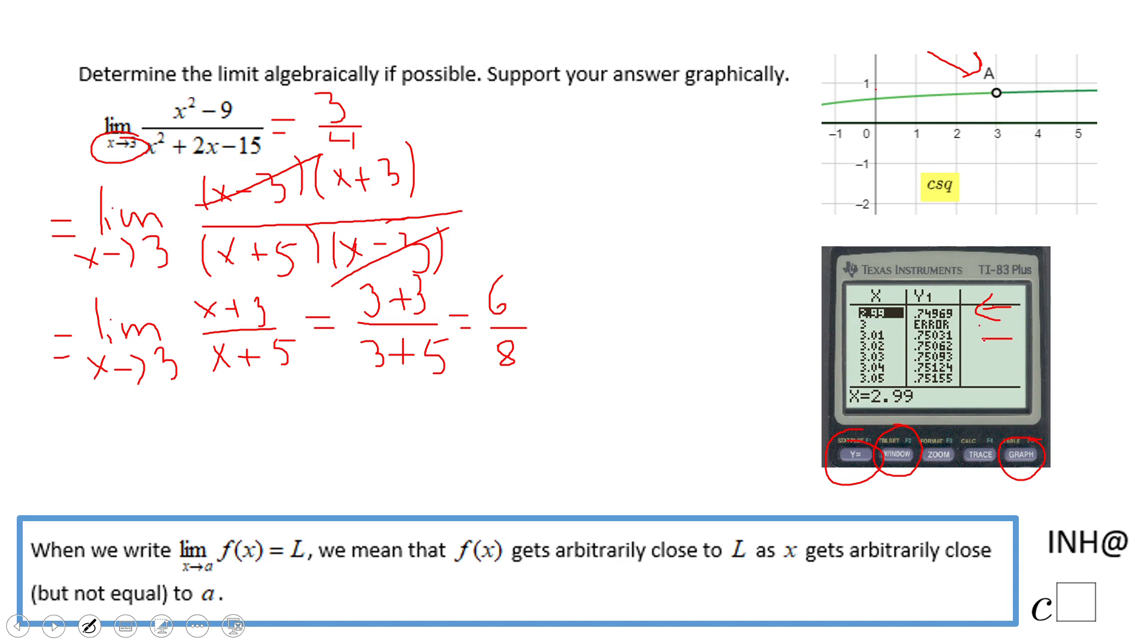And you notice when x is getting closer and closer to 3, the value of the function y is getting closer and closer to 0.75, which is nothing else than 3 over 4.